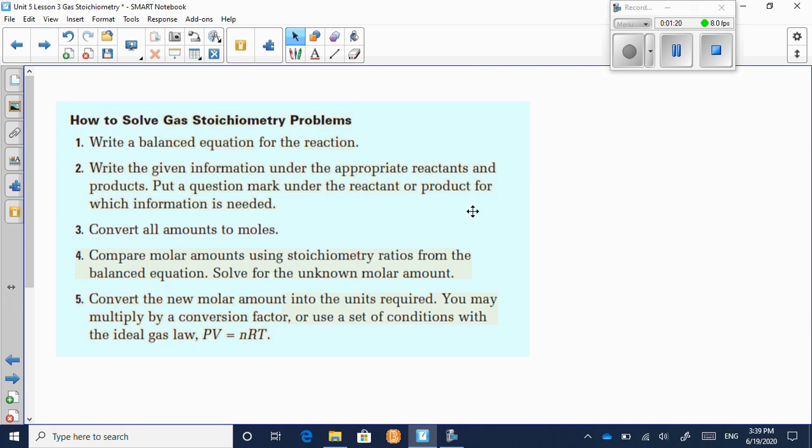Just as a review, here are the steps to solving stoichiometry questions: Write the balanced equation, write down the information, convert everything to moles, do ratios, mole ratios, and then convert back to whatever is required. So those are the same steps that we've always done.